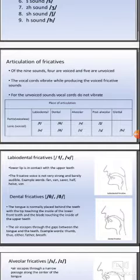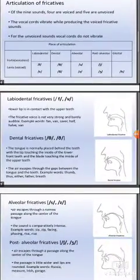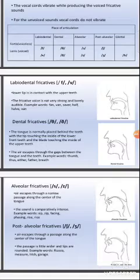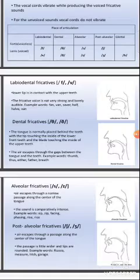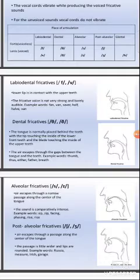When you pronounce the voiced and also the voiceless fricatives, it moves and produces that type of phonetics. That is why I have kept the table. The first one is labiodental fricatives. What are the labiodental fricatives? F and also V. When you pronounce F or V, your lower lip is in contact with the upper teeth. The fricative voice is not very strong and is barely audible.